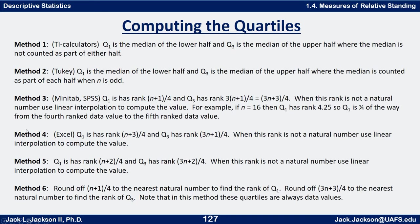So here are six different methods — don't freak out, the good news is you don't have to know all six. Method one is used by the TI calculators: Q1 is the median of the lower half and Q3 is the median of the upper half, where the median is not counted as part of either half. Tukey's method is similar: Q1 is the median of the lower half and Q3 is the median of the upper half, but the median is counted as part of each half when n is an odd number.